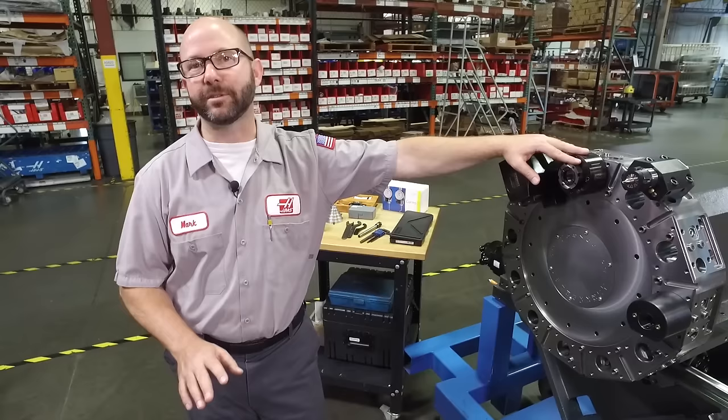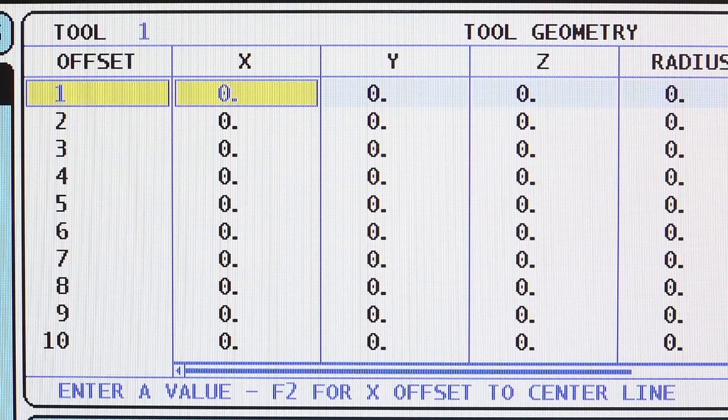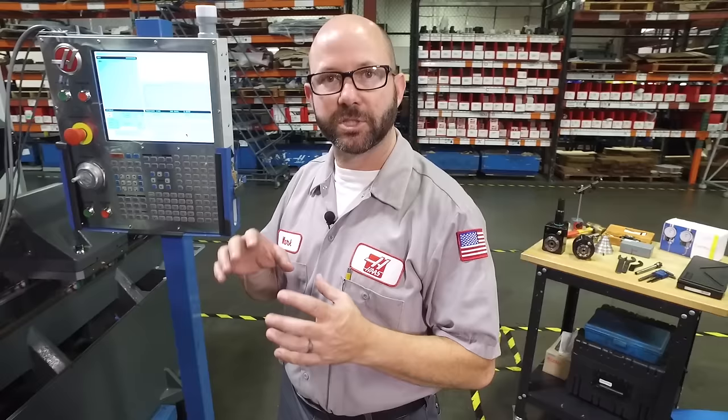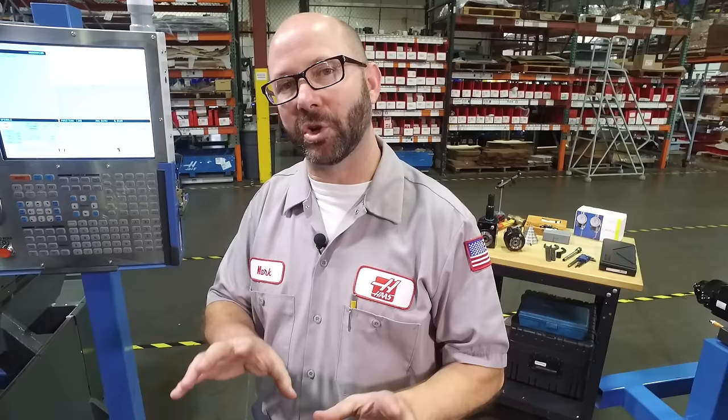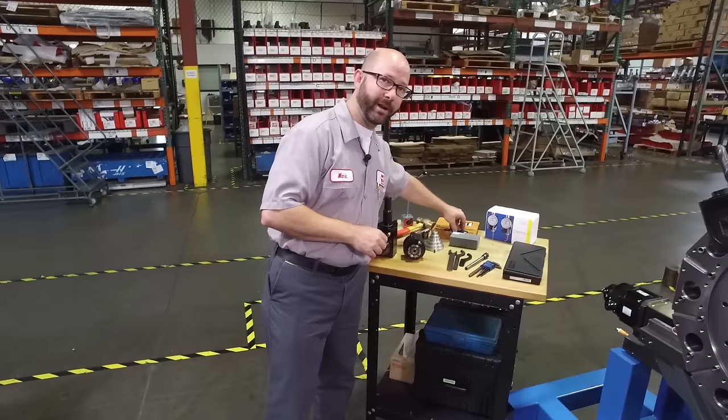Now our axial tool holders are really easy to set up. In fact, from the factory really all we should have to do is go to our offset page, highlight the tool that we're trying to line up and press the F2 key. That's going to write the X axis spindle center line to our offset page for that tool. Now trust but verify. I want to make sure that that value is correct.